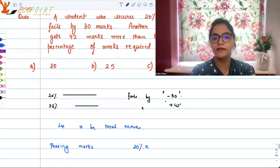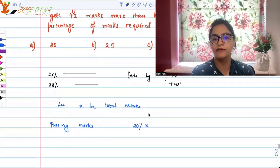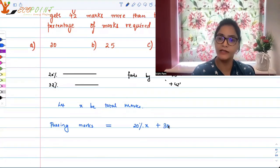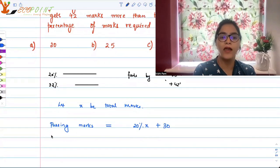The person who got 20 percent of x failed by 30 marks, so the passing marks must be 20 percent of x plus 30, because he failed by 30 marks. And also...